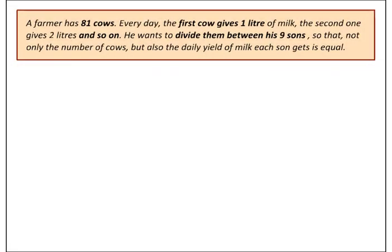We are going to solve a puzzle that sounds like an arithmetic or number theory problem, but we will solve it using a number system. A farmer possesses 81 cows: the first gives 1 litre of milk, the second gives 2, the third gives 3, and so on up to cow number 81, which gives 81 litres of milk every day.